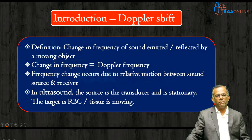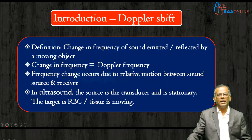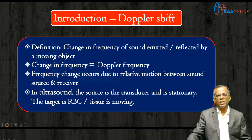Coming to Doppler shift, the basic definition is a change in frequency of sound that is emitted or reflected by a moving object. This change in frequency is the Doppler frequency. This frequency change occurs due to a relative motion between the sound source and the receiver. In ultrasound, the sound source is the transducer which is stationary, and the target is the RBC or the tissue which is moving.